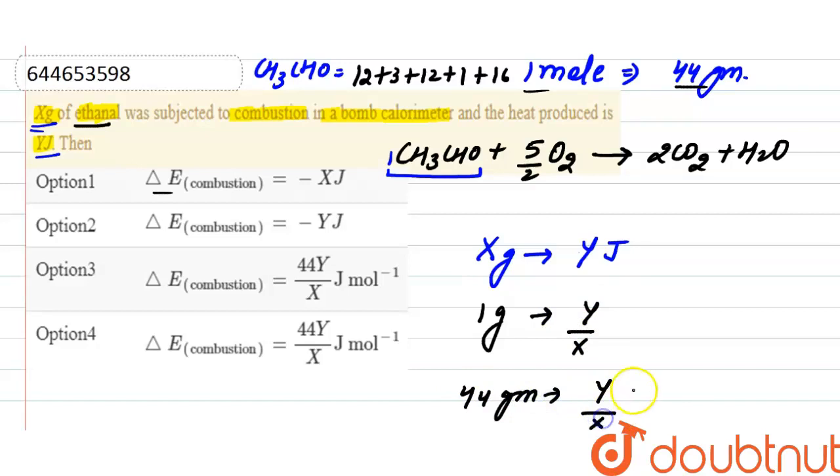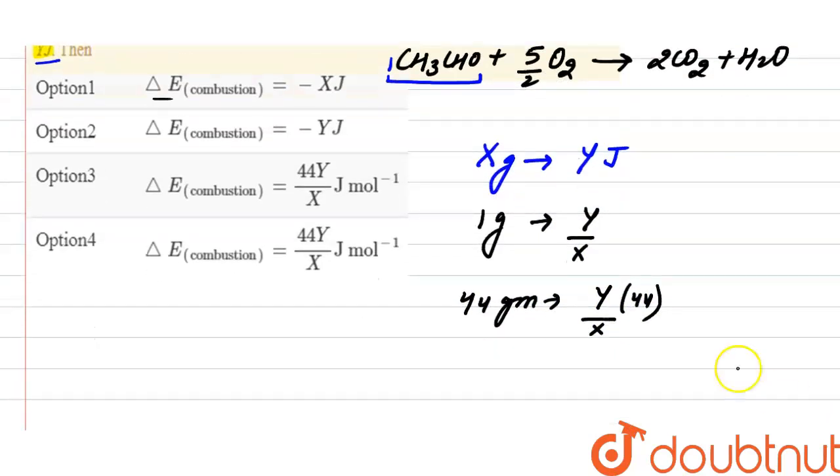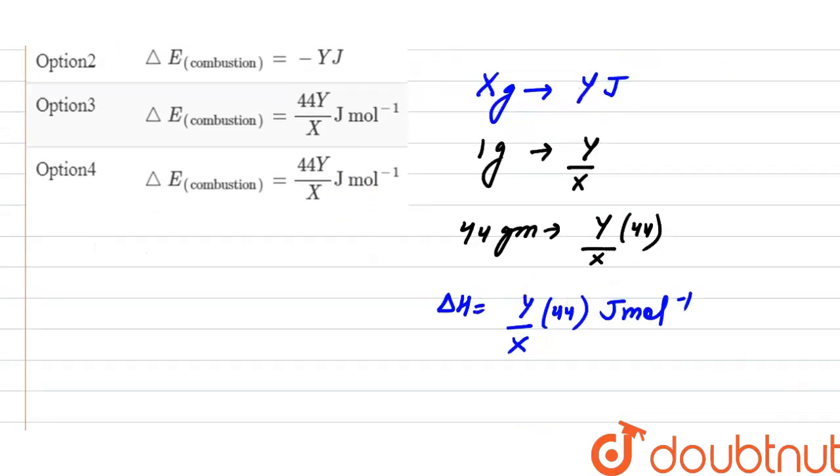So here the enthalpy of the reaction will be Y divided by X into 44 joule per mole. Okay, now we have to find out internal energy of combustion reaction.